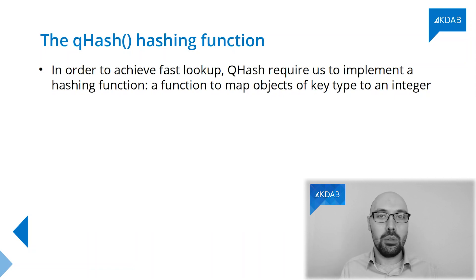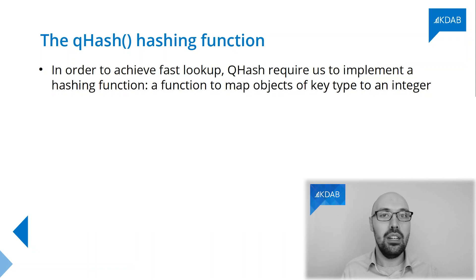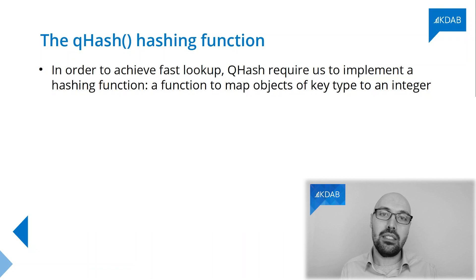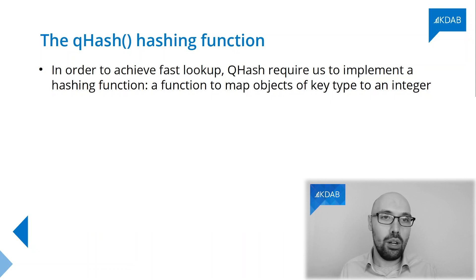Qt obviously comes with qhash overloads for a lot of data types — C++ types like int and double, but also Qt types like QString, QDate, QTime, and similar. So if you want to build a QHash with an integer or QString as a key type, just go ahead — Qt is filling the gaps for you. However, if you do want to create a QHash with a type of yours as a key type, then you will need to overload qhash for your custom key type. All you need to do is provide an overload of qhash taking objects of your key type.